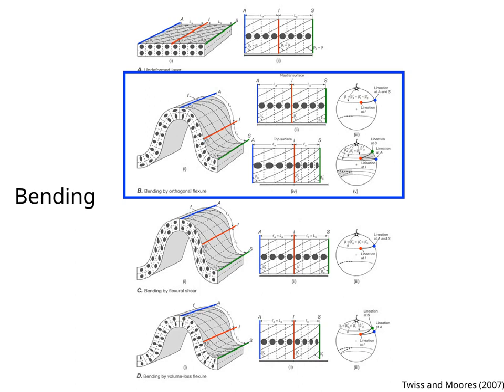On this surface, there is no strain, and the angle of the lineation with the fold axis is beta.